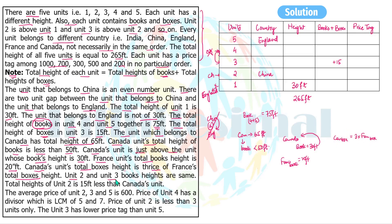So x equals 30 — this is confirmed regardless of which position Canada takes. Now unit three's total height would be 30 (books) + 15 (boxes) = 45 feet. Canada's height must be 65 feet, which is not 45, so Canada cannot be unit three. Therefore Canada is fixed at unit four, and Canada's total height is 65 feet.